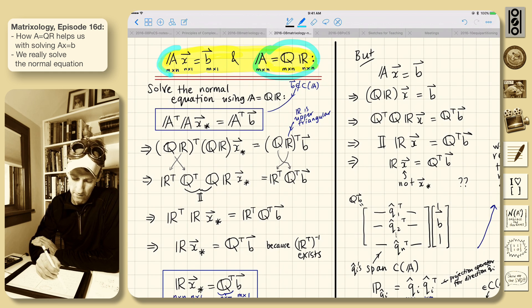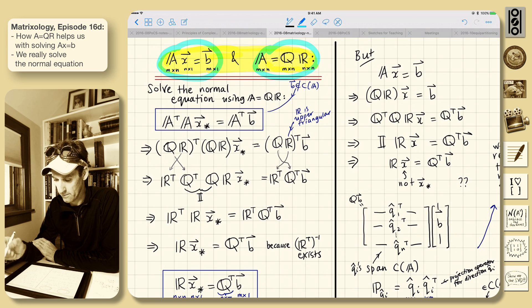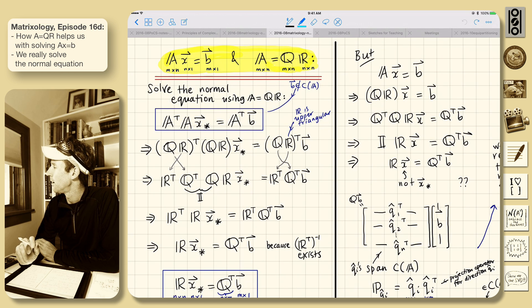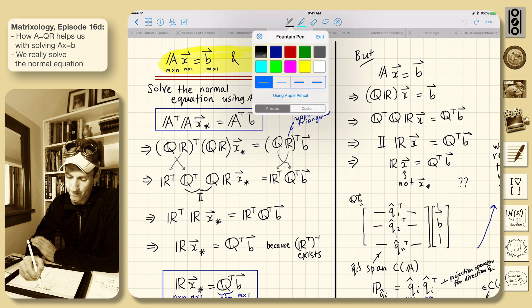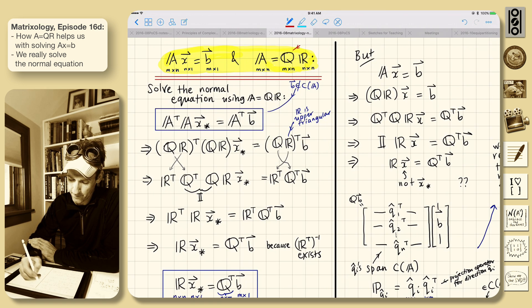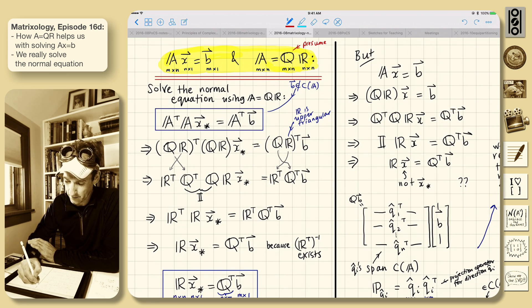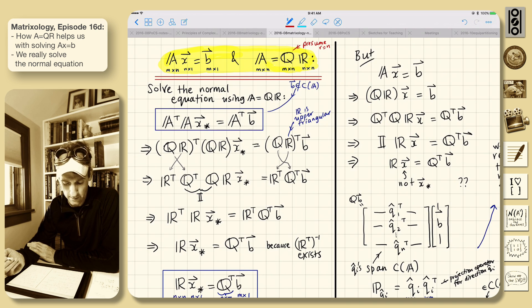And we're going to see what this means for AX equals B. We love that equation. There's a slight piece in here where we're worried about. So there's a presumption just for this point. Presume that N equals R, the rank of the matrix equals N.